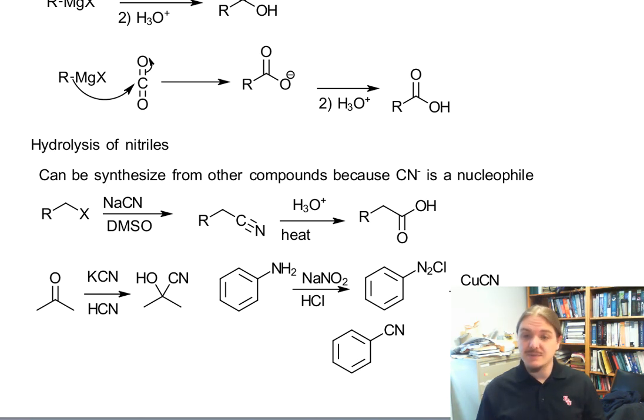So nitriles can be generated in a lot of ways, which makes them a useful precursor to carboxylic acids. I'm going to talk about the mechanism of the hydrolysis of nitriles in the videos on nitriles. And I do note that esters and other carboxylic acid derivatives can also be hydrolyzed to carboxylic acids. So this concludes my video on the synthesis of carboxylic acids. Thank you for watching.